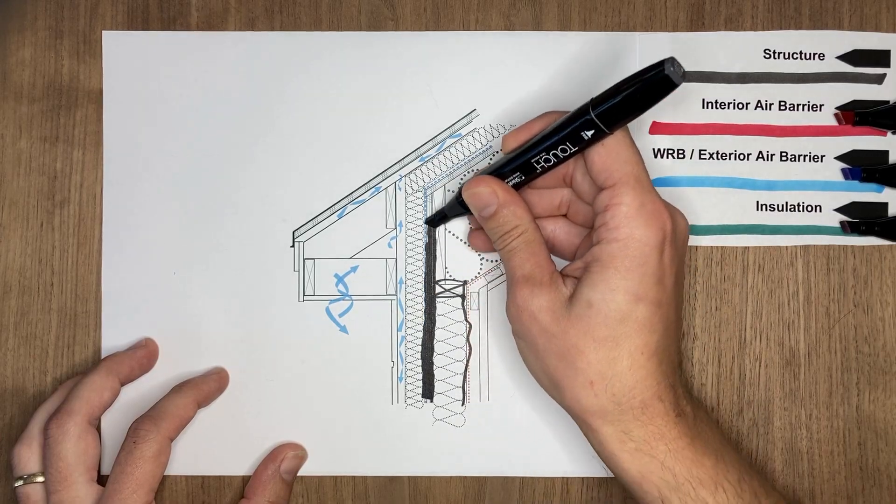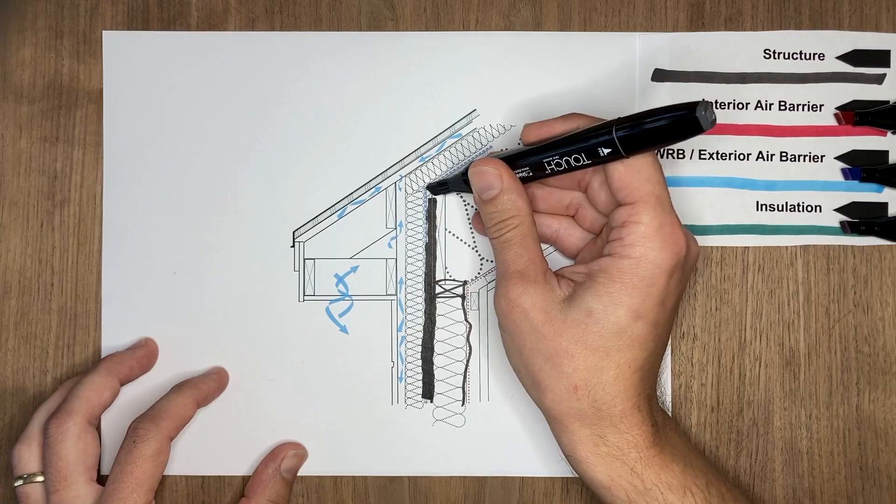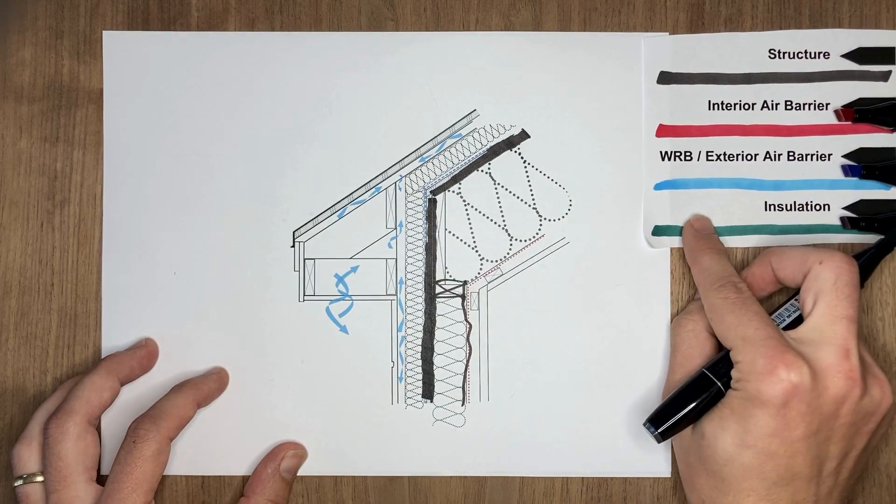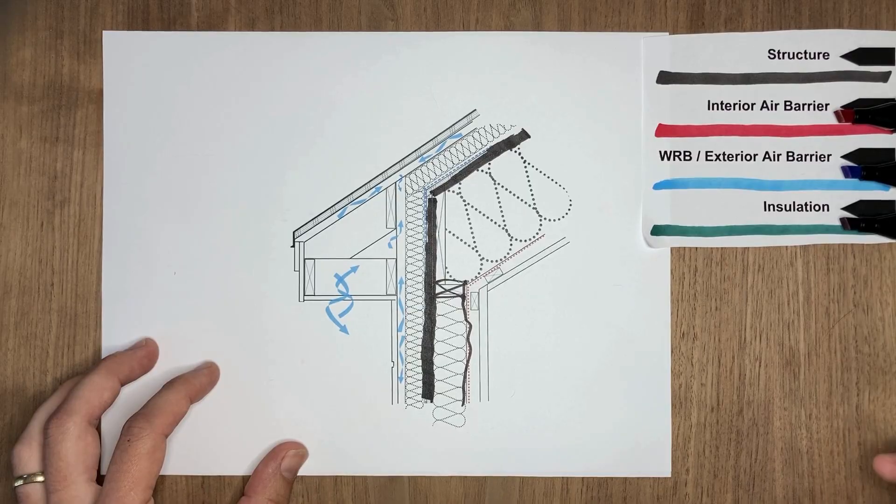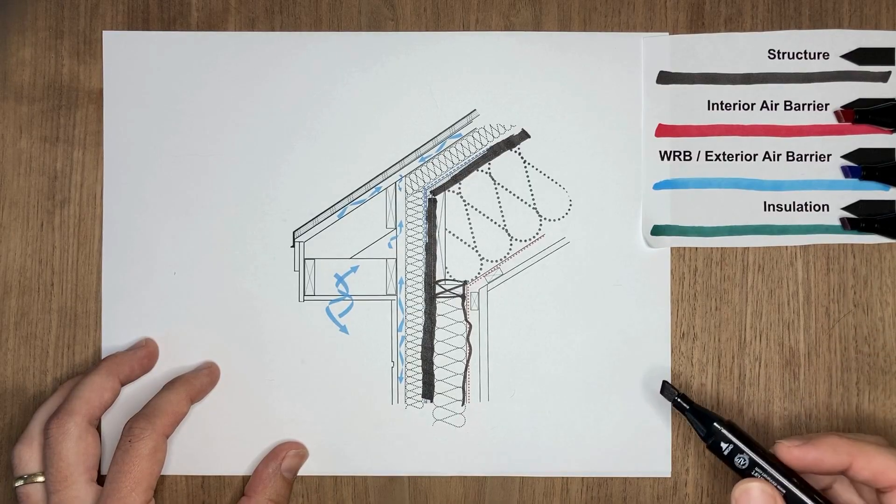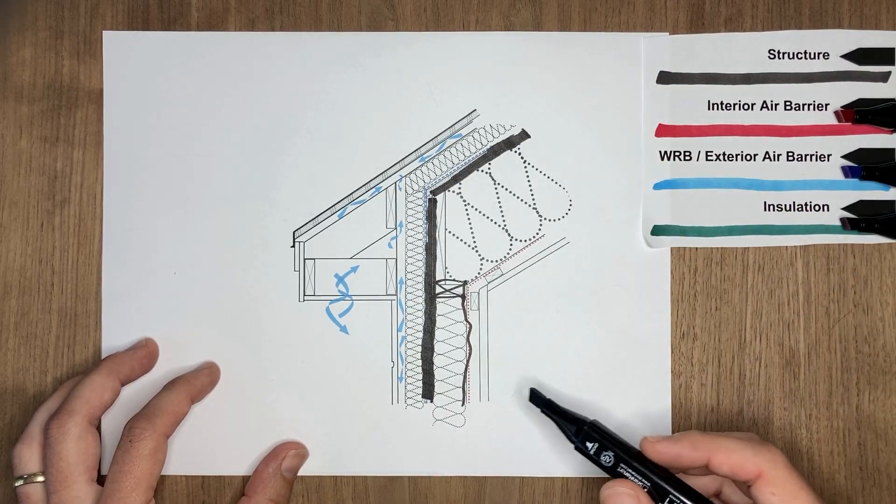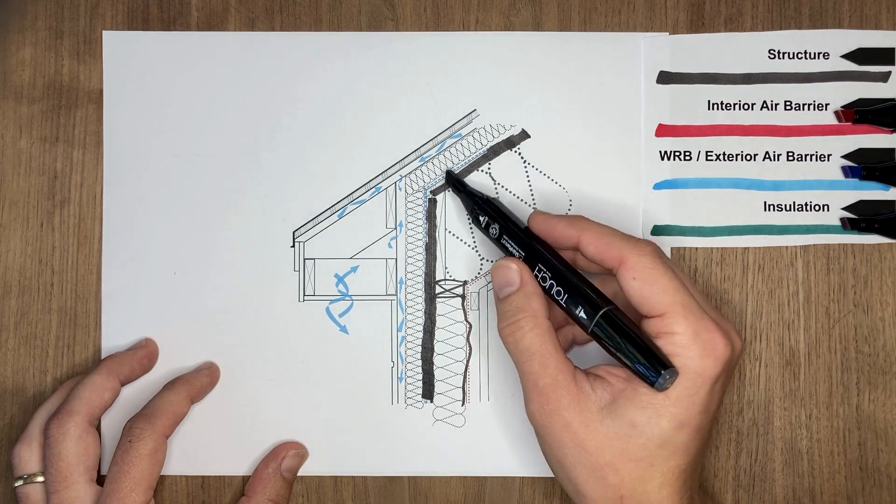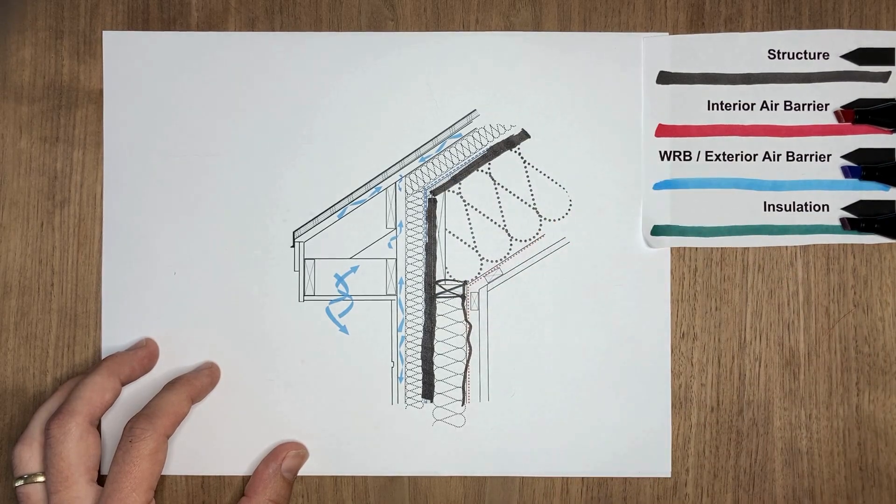So we have our sheathing, whether that's plywood or OSB, on the exterior side of that wood framing. This is sometimes called monopoly framing, but it's where the sheathing stays in line from the wall to the pitched roof.